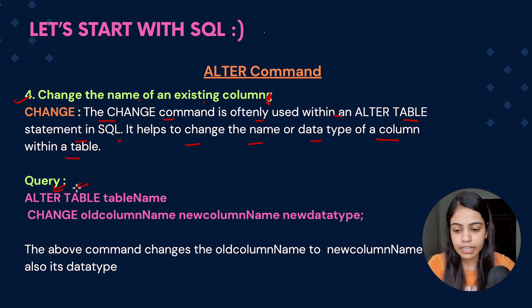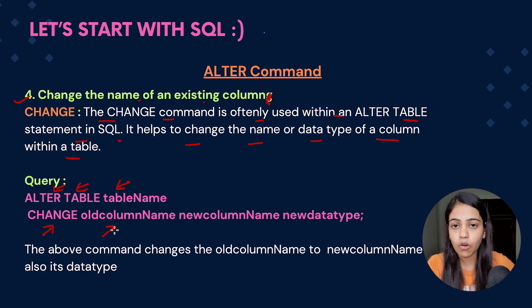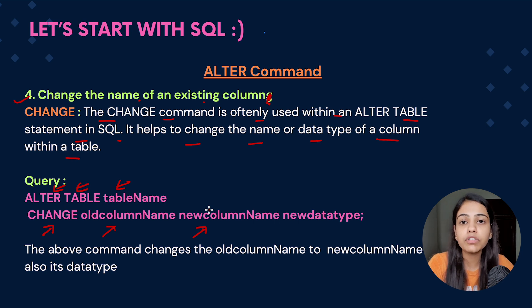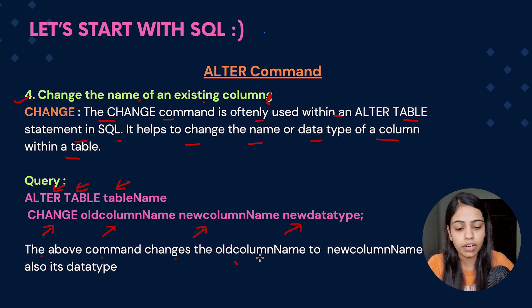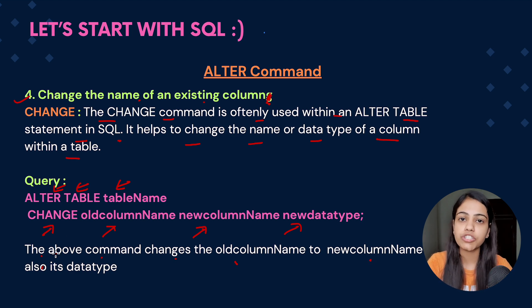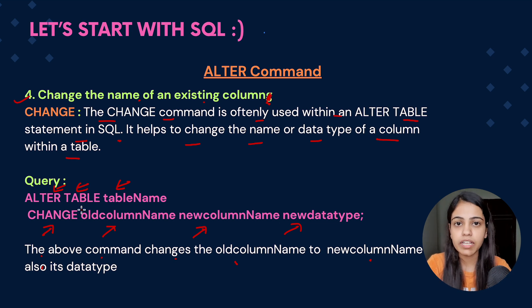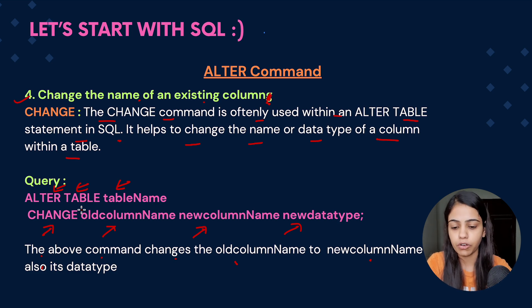The query is: ALTER TABLE, followed by the table name, then CHANGE, then the old column name, then the new column name, and then the new data type for that particular column. The above command changes the old column name to a new column name and also its data type. If the new column name doesn't have a new data type, you can just give the data type of the old column name.